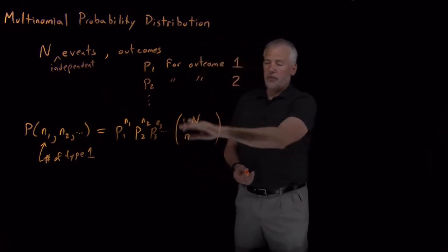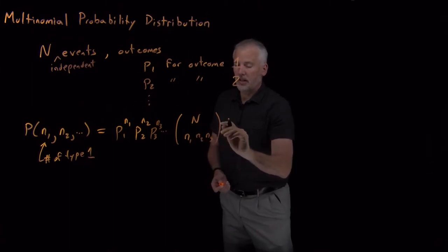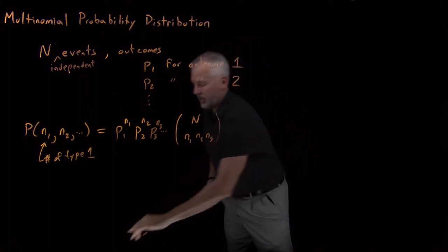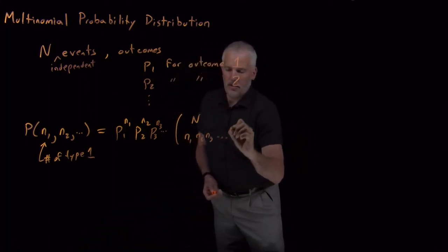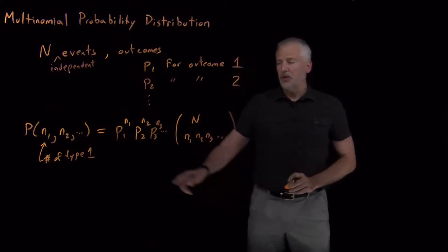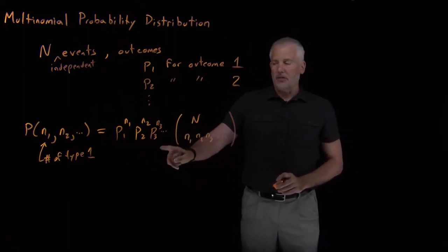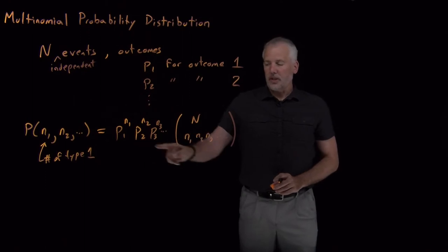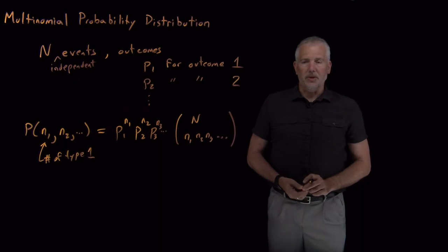So we also need to include P3, and P4, and so on. And then instead of a binomial coefficient, we would have a multinomial coefficient with an n1, an n2, n3, dot dot dot. So that's the only difference between the binomial and the multinomial probability distribution, is we include all the different outcomes when we multiply the probabilities together for each set of outcomes, and then we use a multinomial coefficient instead of the binomial coefficient to calculate the multiplicity.